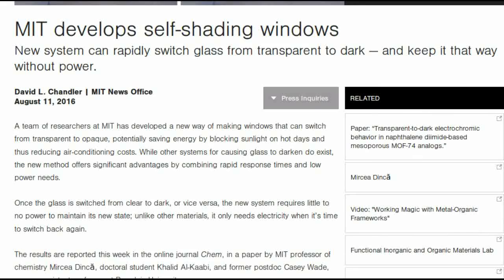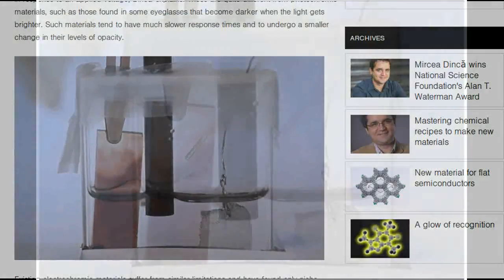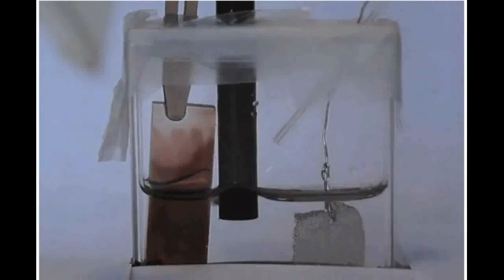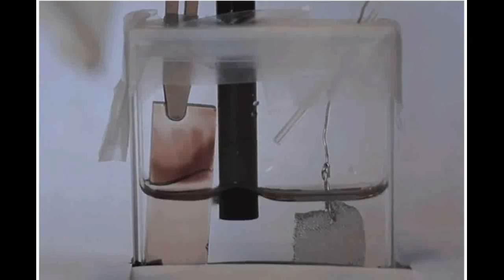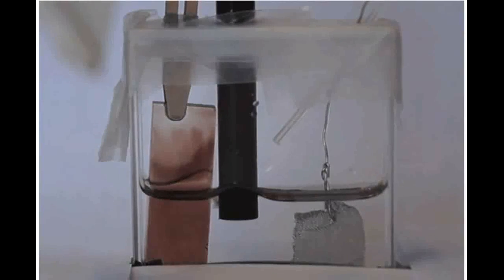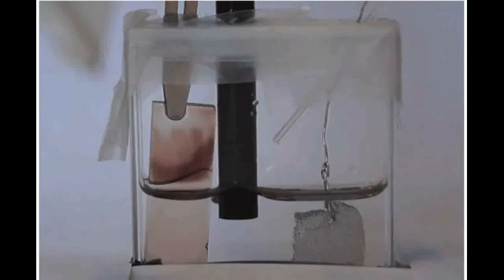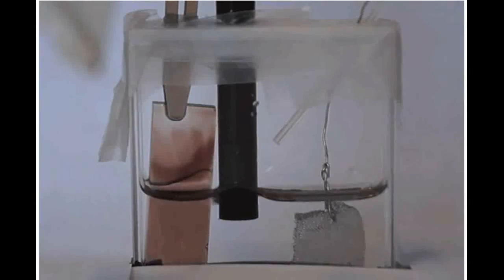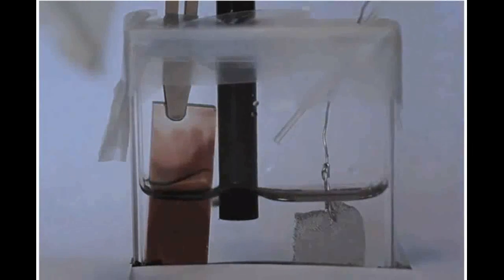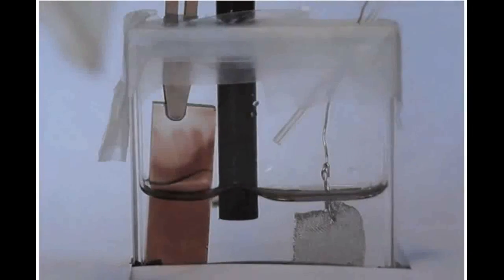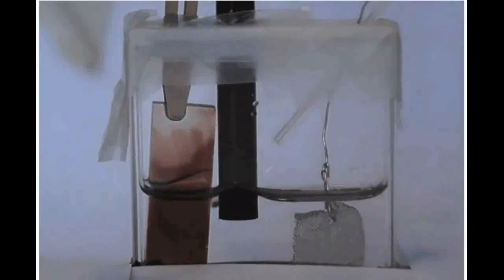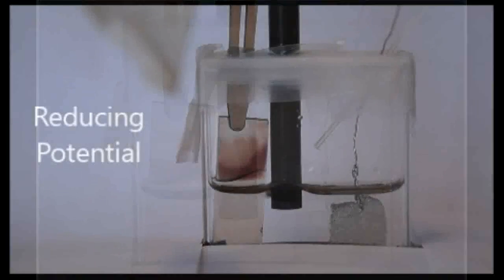While other systems for causing glass to darken do exist, the new method offers significant advantages by combining rapid response times and low power needs. Once the glass is switched from clear to dark or vice versa, the new system requires little to no power to maintain its new state. Unlike other materials, it only needs electricity when it's time to switch back again.